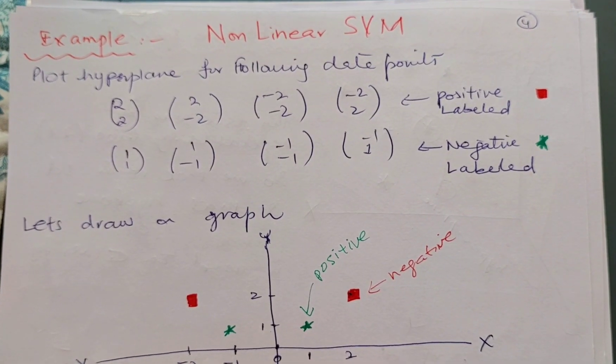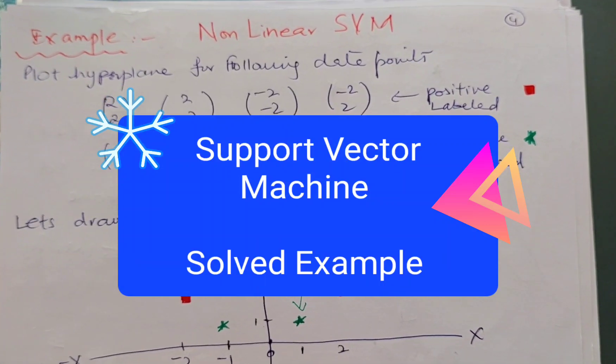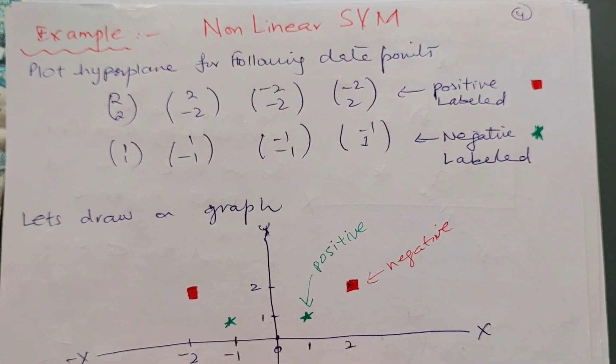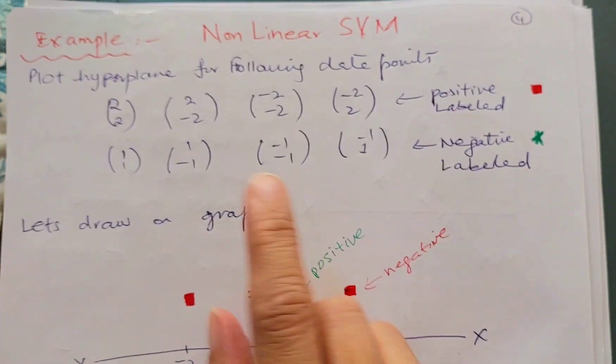Hello everyone, in a previous video we learned the concept of SVM, the support vector machines. Now we are going to solve an example on it. We are given with this data: we can see that this is a data 2, 2, 2, -2, and it is positive labeled data.